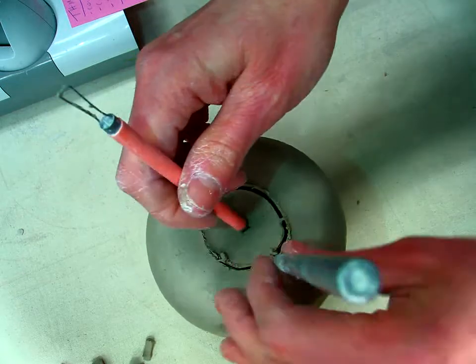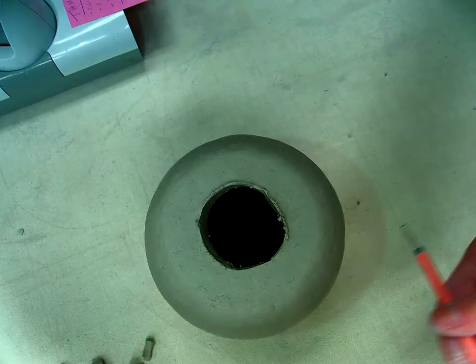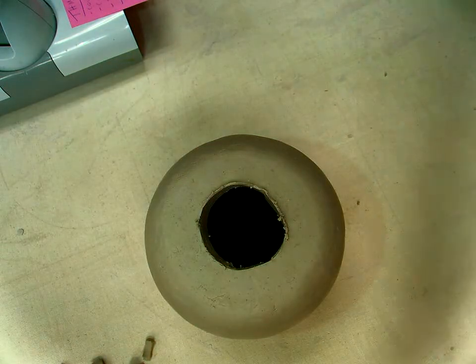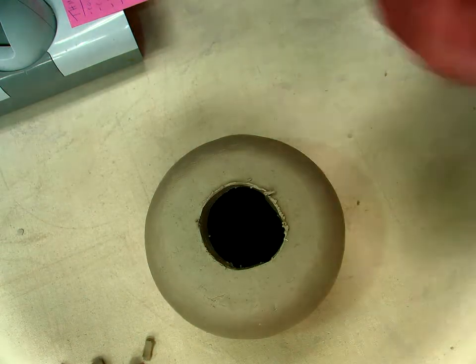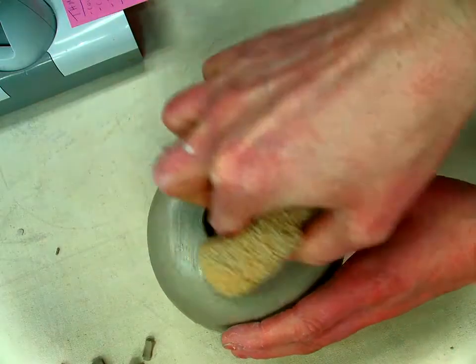So once you get it cut the whole way through, kind of pick it out. If it falls in, it's not a big deal. We'll have to wait till it shrinks and then try and get it out. And then you can use your sponge to go around here and smooth that out.